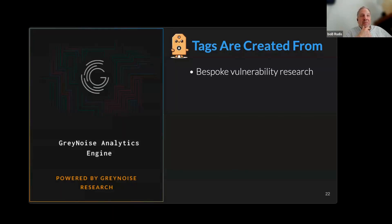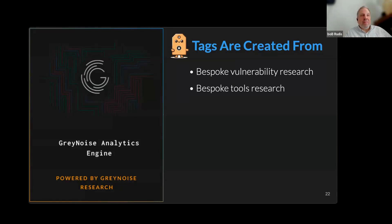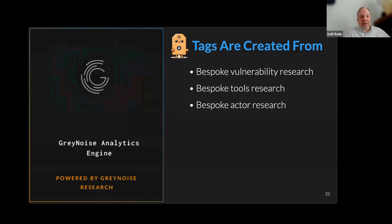We have a team of researchers who do bespoke vulnerability research — we dig in, pull things apart, look at hex strings, do patch diffs, and look at memory of running things. We also keep an eye on what's happening in cyber: new tools, new Metasploit modules, new Nuclei modules. We work with partners to identify new actors out and about — like Censys, who scan the internet to help protect organizations. Trinity Cyber and VulnCheck come to mind quickly as well. Working with them means we can collaborate on vulnerability research and get detections out much more quickly than if we'd done them on our own.